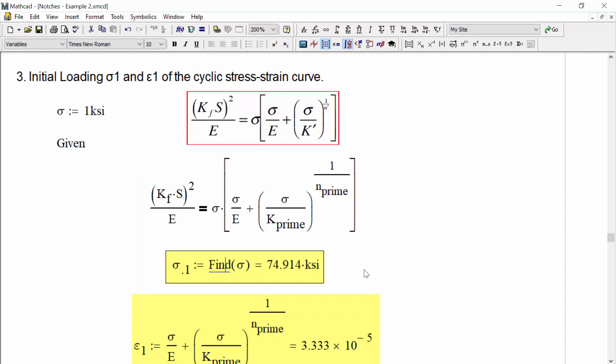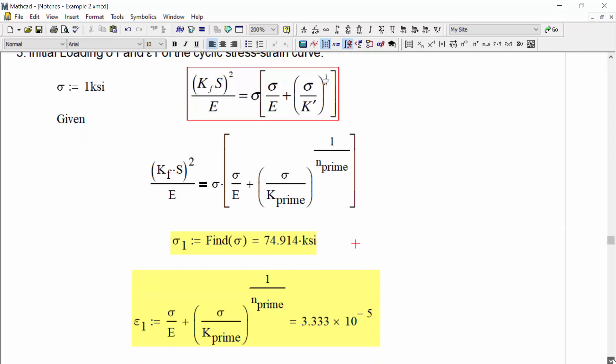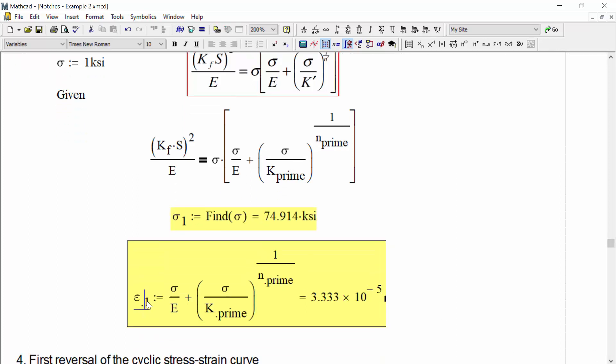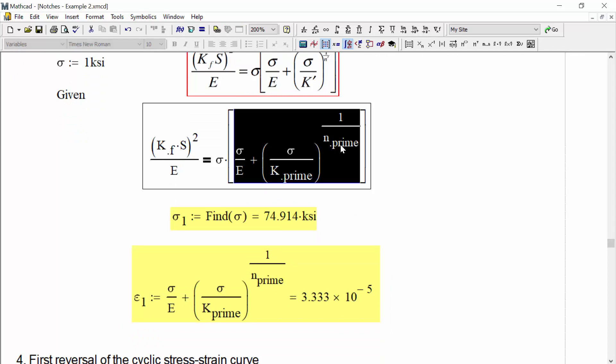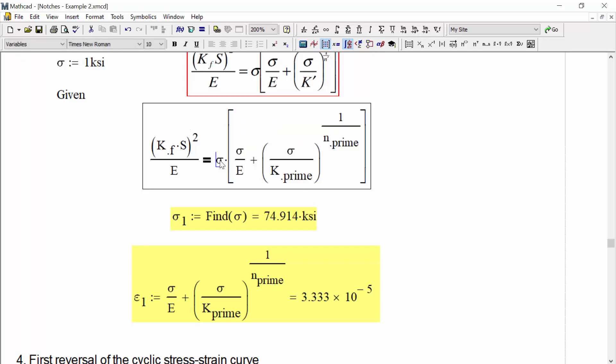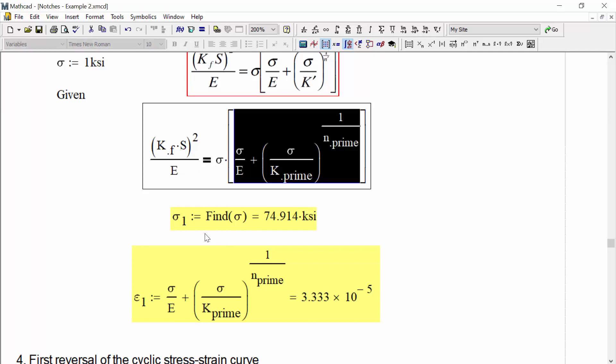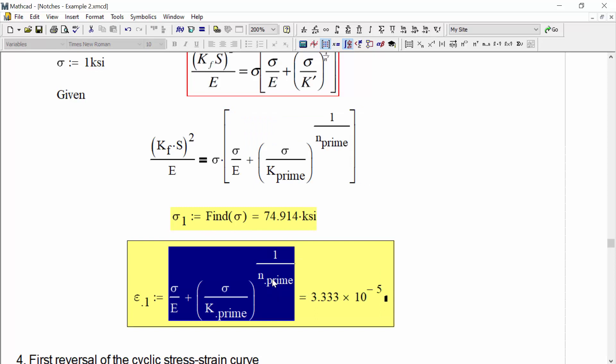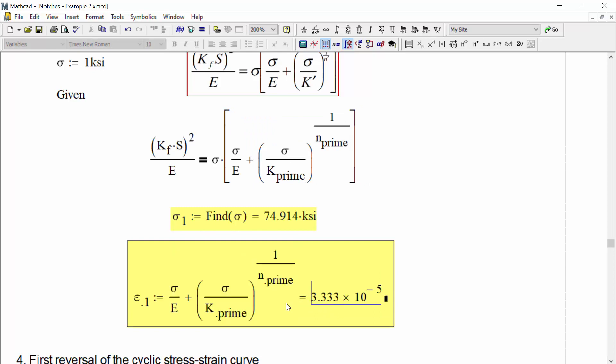With sigma 1 found, we then can find eta 1, the strain, as equal to the inner portion of this equation, the inner portion of Ramberg-Osgood. Because remember, this is an energy equation. It's stress times strain. That's what these equations mean. So we go ahead and program that up and we find that strain at position one is equal to 3.333 E to the negative 5.